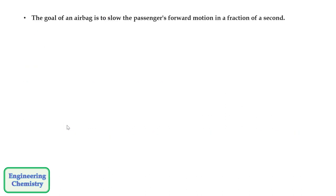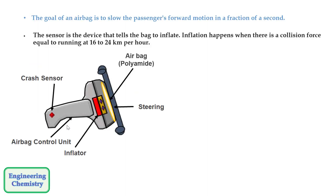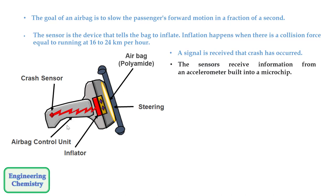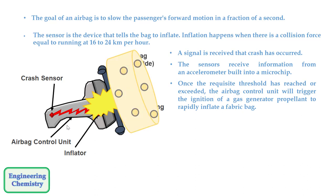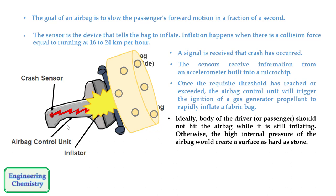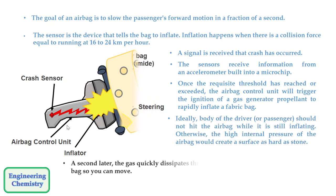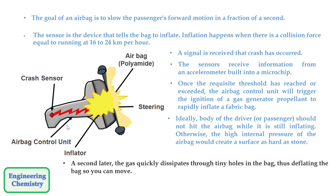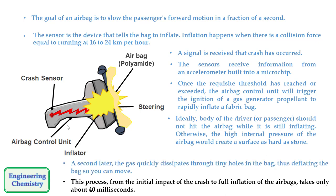The goal of an airbag is to slow the passenger's forward motion in a fraction of a second. The sensor tells the bag to inflate when there is a collision force equal to running at 16 to 24 km/h. A signal is received that a crash has occurred; the sensors receive information from an accelerometer built into a microchip. Once the threshold is reached, the airbag control unit triggers the ignition of a gas generator propellant to rapidly inflate the fabric bag. Ideally, the driver or passenger should not hit the airbag while it is still inflating, otherwise the high internal pressure would create a surface as hard as stone. A second later, the gas quickly dissipates through tiny holes in the bag, deflating it so you can move. This entire process from initial impact to full inflation takes only about 40 milliseconds.